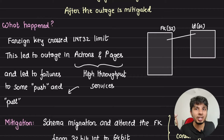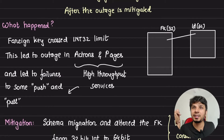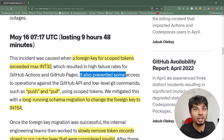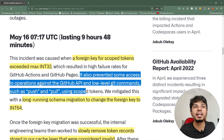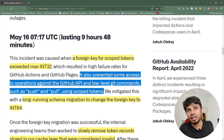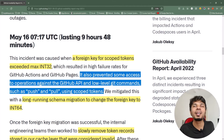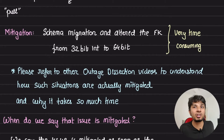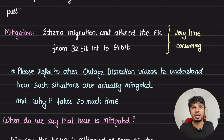By default, a 32-bit signed integer is 2 billion, while an unsigned integer is 4 billion — and that's not much for a write-heavy system. Another set of operations where you might find the integer ID crossing its limit is push and pull, which is exactly what we also see in the outage document. It also prevented some access to operations against the GitHub API and low-level Git commands like push and pull that used scope tokens. Since scope tokens are a very frequent operation, they exhausted and caused the outage. So if you're using a SQL database with an auto-increment integer column, ensure you are well within the limits.